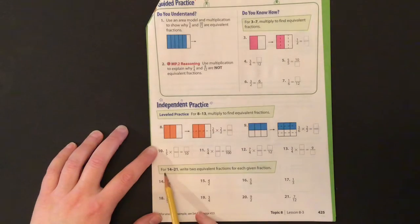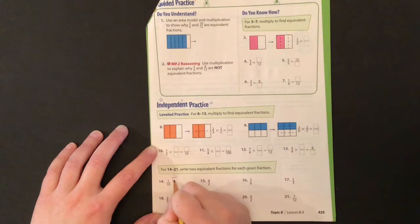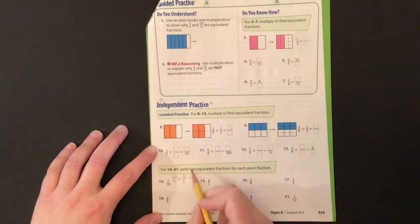So starting with number 14, it says to write two equivalent fractions for each given fraction. I know that I can multiply 1 tenth by a fraction that's equivalent to a whole, so I'm going to choose 2 halves. So 1 times 2 is 2, 10 times 2 is 20, and we get 2 20ths.